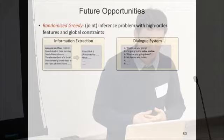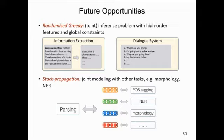For future opportunities: the randomized greedy algorithm can be applied to different joint inference problems where high-order features or global constraints are useful — for instance, in information extraction, global constraints may improve consistency of predictions across documents, and in dialogue systems, global features may help identify co-reference across sentences. For stack propagation, one direction is to jointly model parsing with tasks like named entity recognition and morphology, learning joint representations to further reduce error propagation.